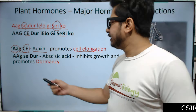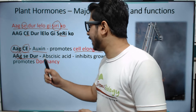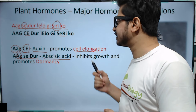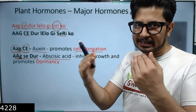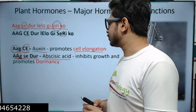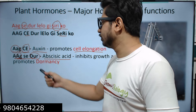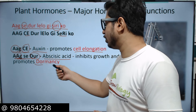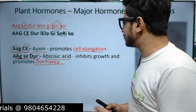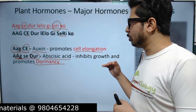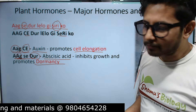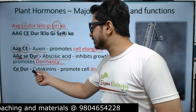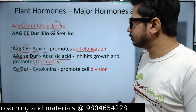The second 'A' is for Abscisic acid. 'Do' — 'D' is for dormancy. The job of Abscisic acid is to inhibit growth and promote seed dormancy.